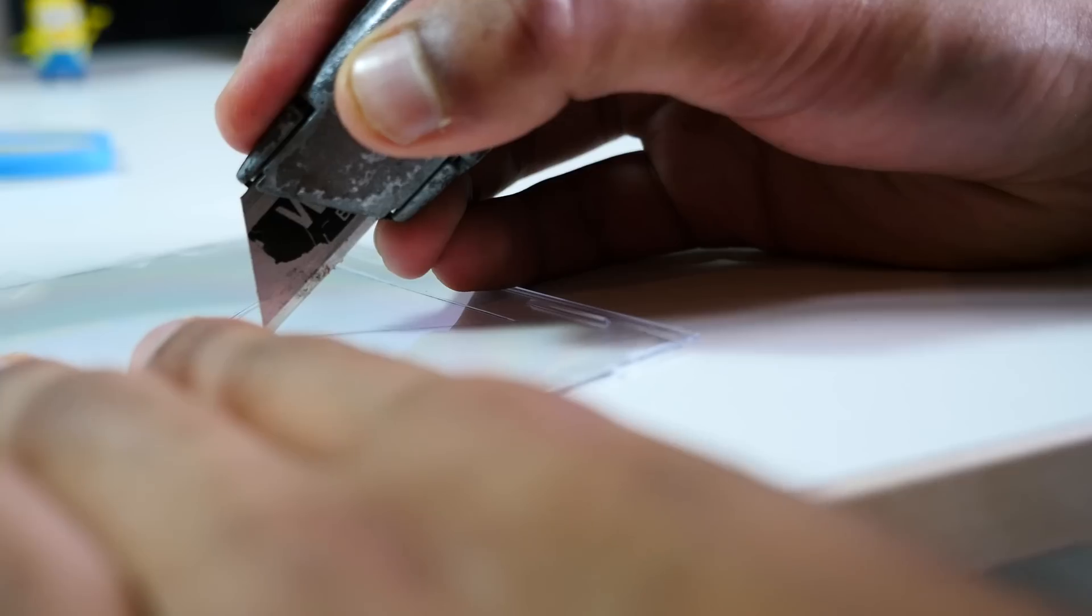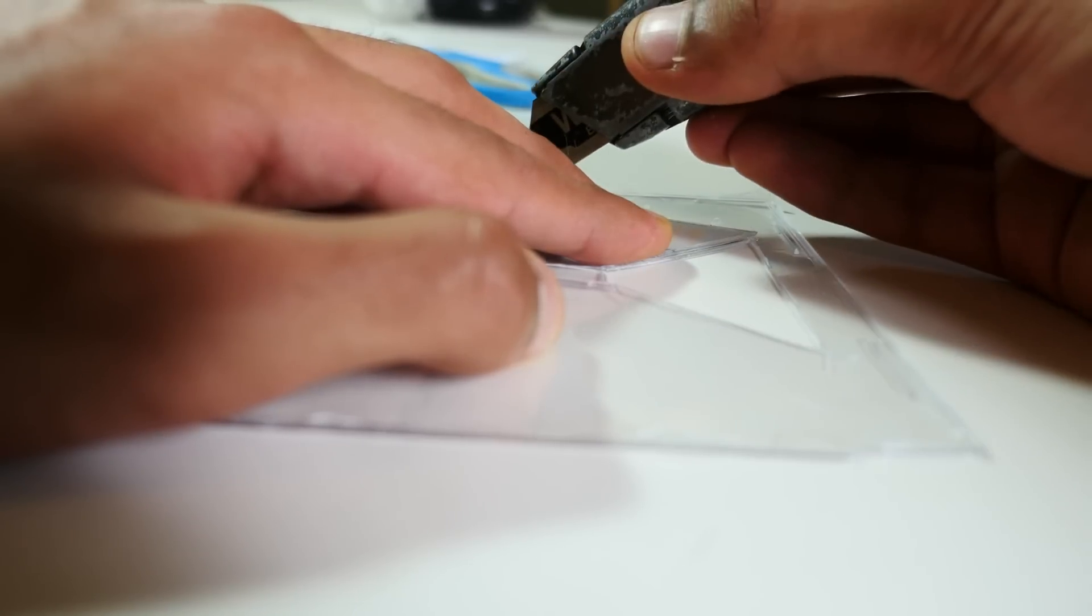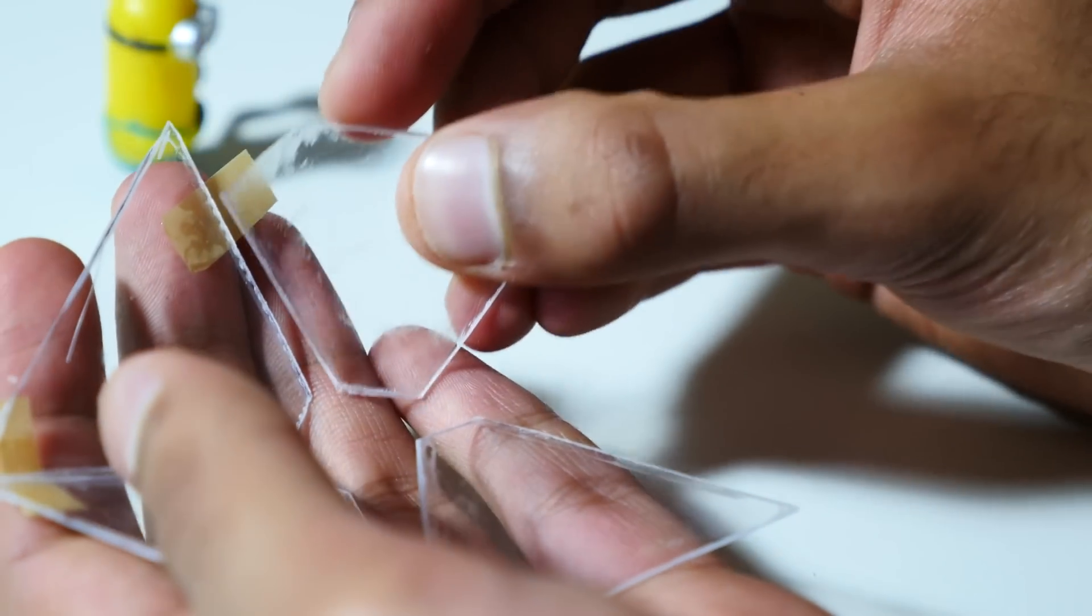So then get a scalpel, a knife or a glass cutter, and very carefully trace around the template. Once you've cut your first one out, you can then use that to get the others.